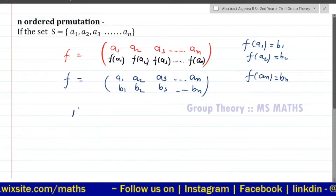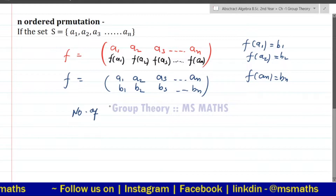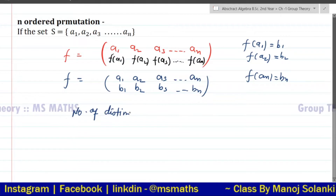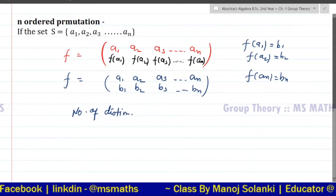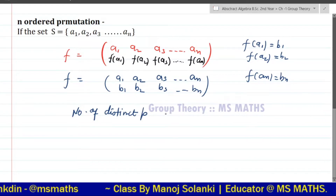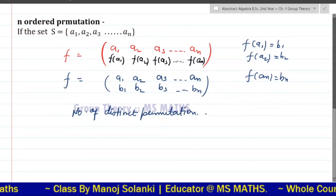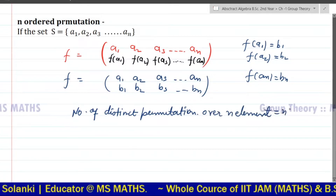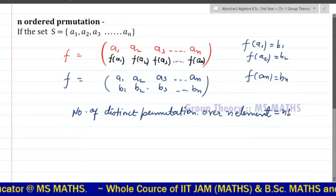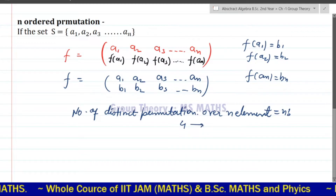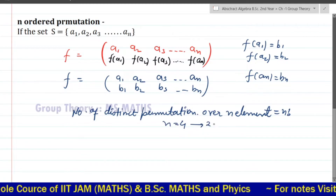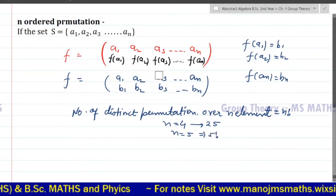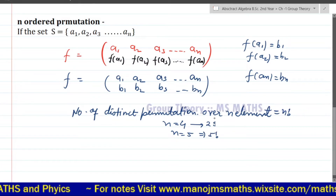Now, the number of distinct permutations over n elements is n factorial. For example, if n = 4, then 4 factorial = 24, and if n = 5, then 5 factorial = 120 distinct permutations.